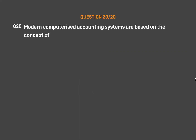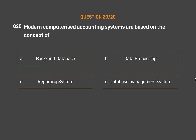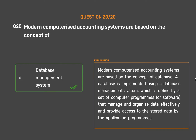Question number 20. Modern computerized accounting systems are based on the concept of: Option A: Back-end database. Option B: Data processing. Option C: Reporting system. Option D: Database management system. The correct answer is Option D: Database management system. Modern computerized accounting systems are based on the concept of a database. A database is implemented using a database management system, defined by a set of computer programs or software that manage and organize data effectively and provide access to stored data by application programs.